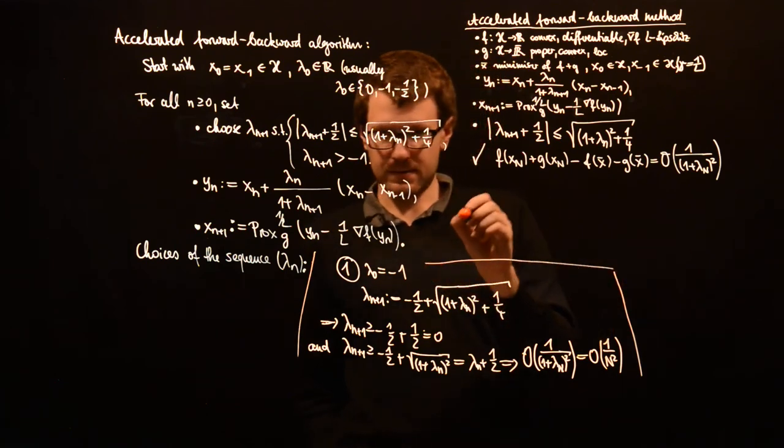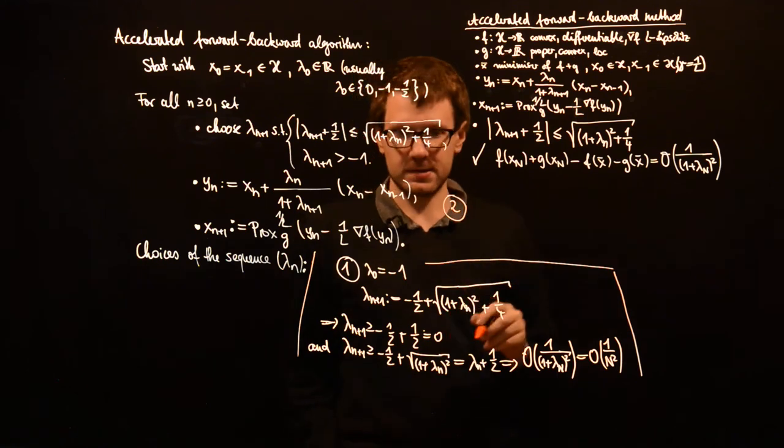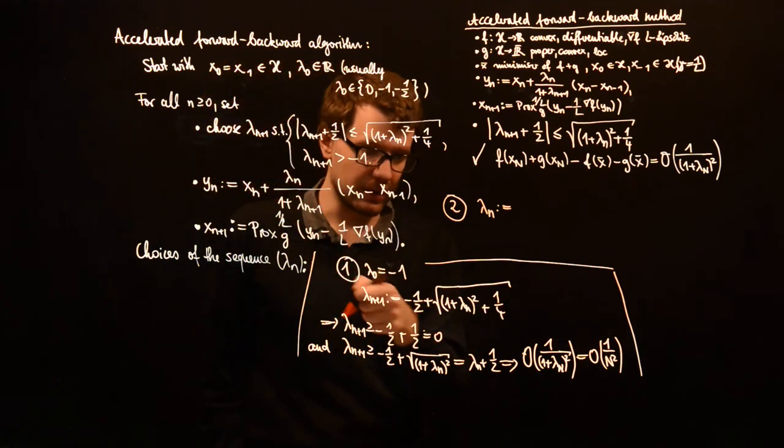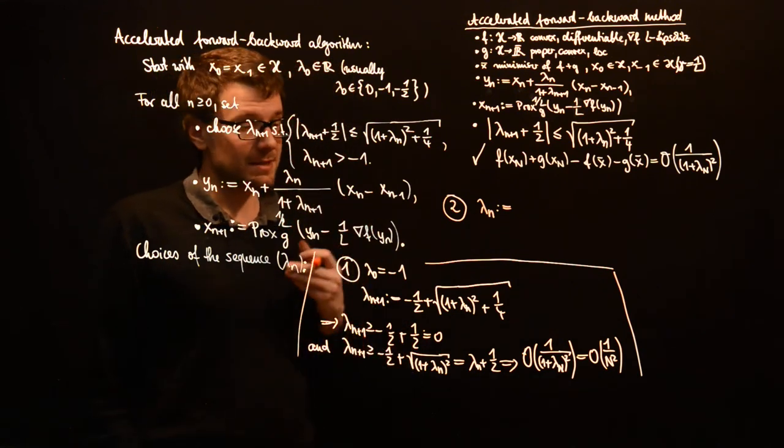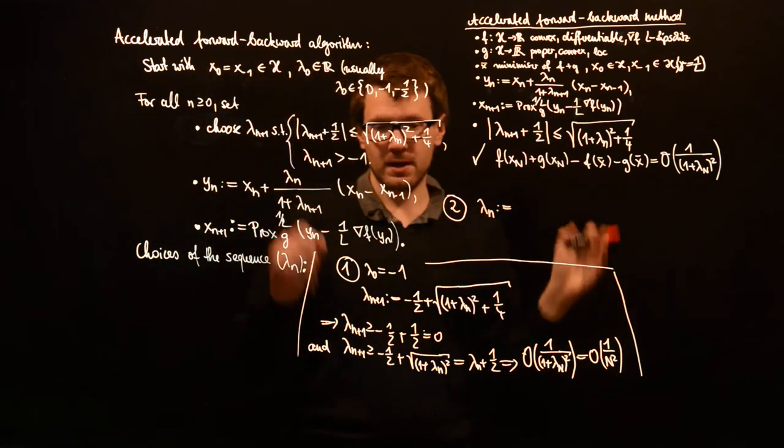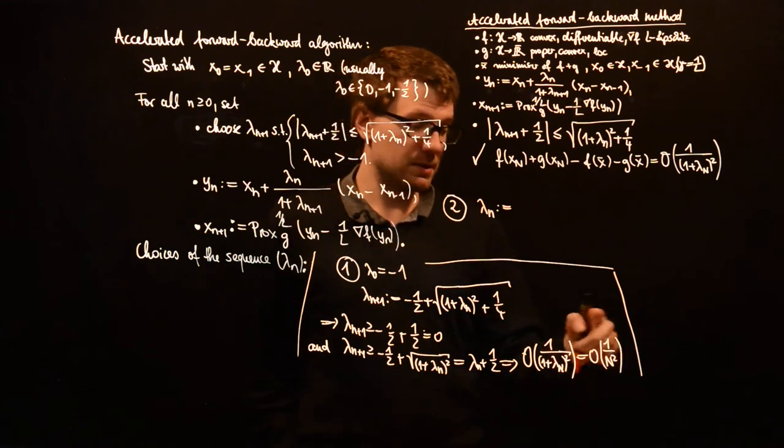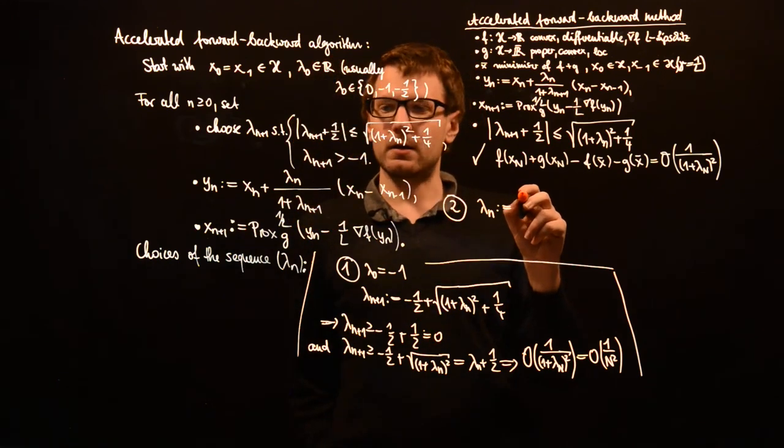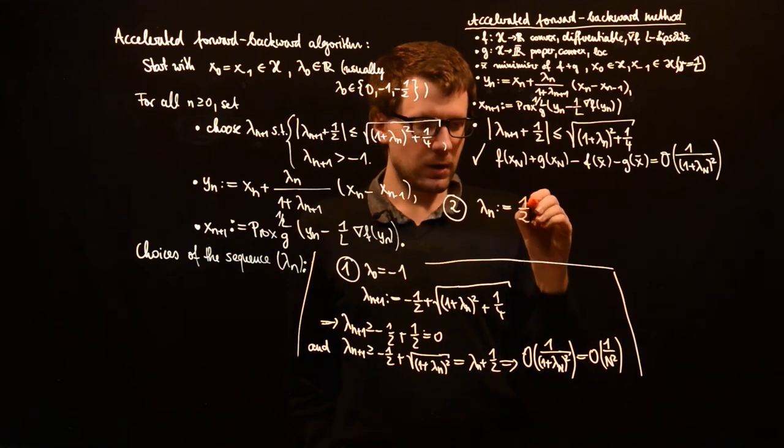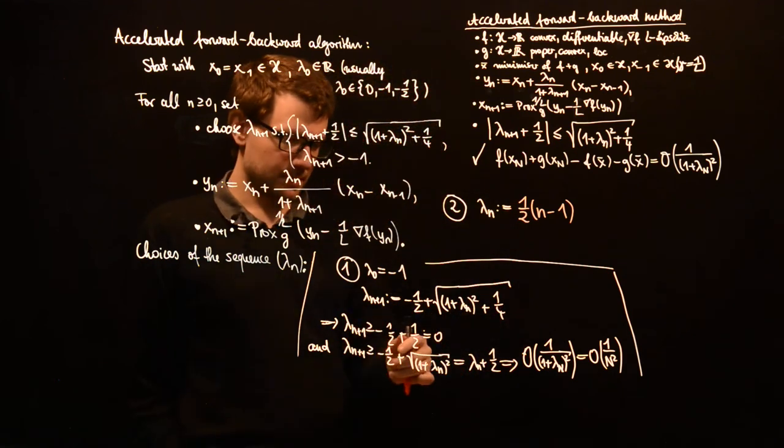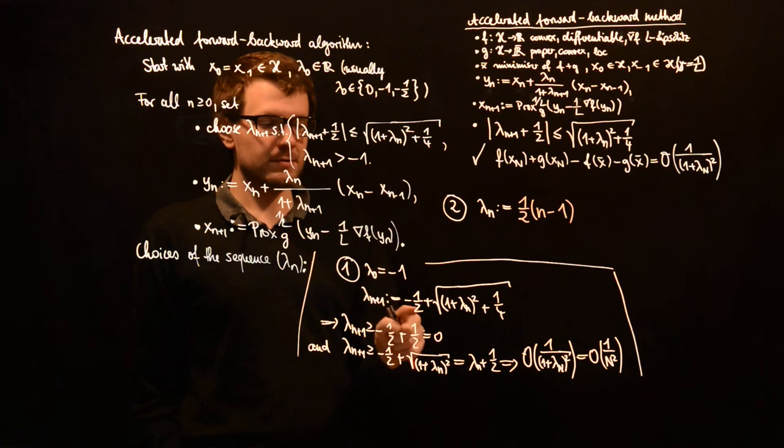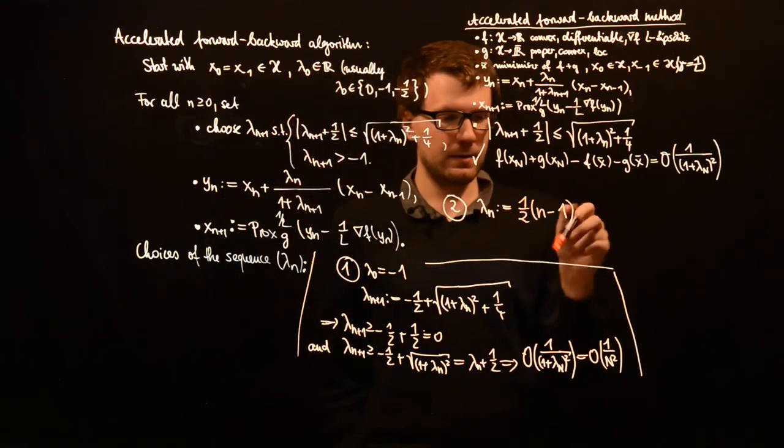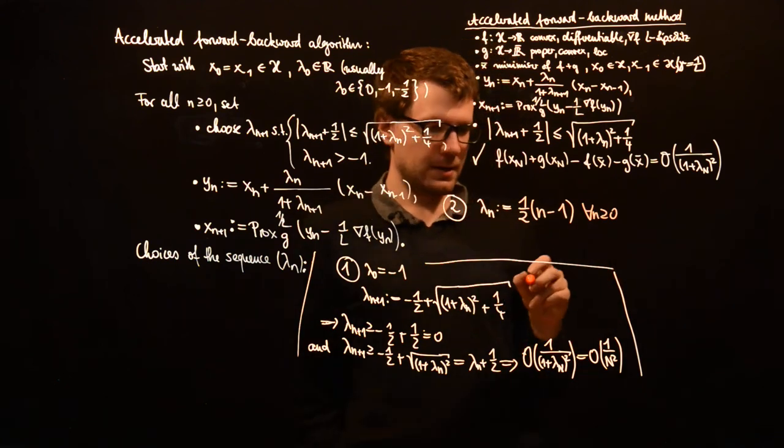That's the first choice of the sequence. And the second choice, you can just take lambda_n not defined by a recursion. You can find an explicit choice which is just slightly suboptimal, but it will also give you the one over n squared convergence rate. So you can choose lambda_n equals one half times n minus one. If you start with minus one in the first choice, you start with lambda_0 equals minus one. In the second, you start with lambda_0 equals minus one half. So this is for all n greater or equal than zero.